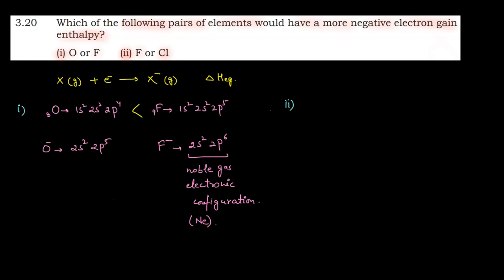Now for the second part: fluorine and chlorine. Fluorine's atomic number is 9, with outermost shell configuration 2s², 2p⁵. Chlorine's atomic number is 17, with outermost shell configuration 3s², 3p⁵.